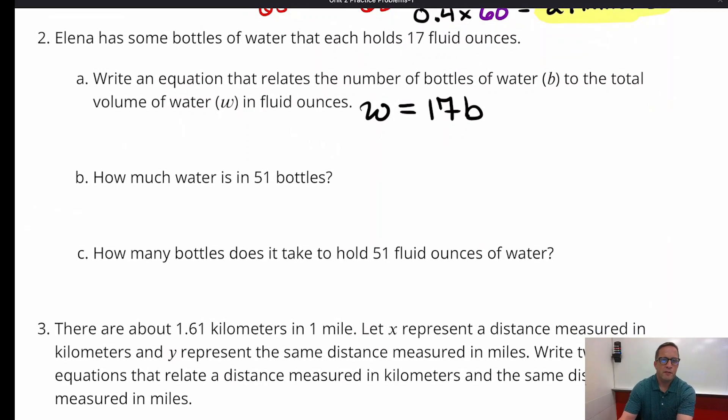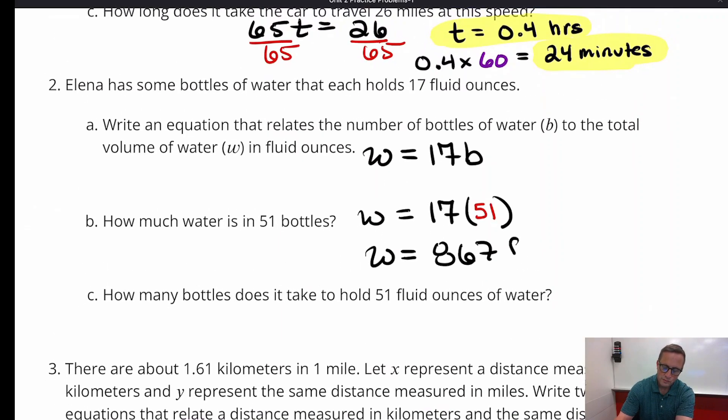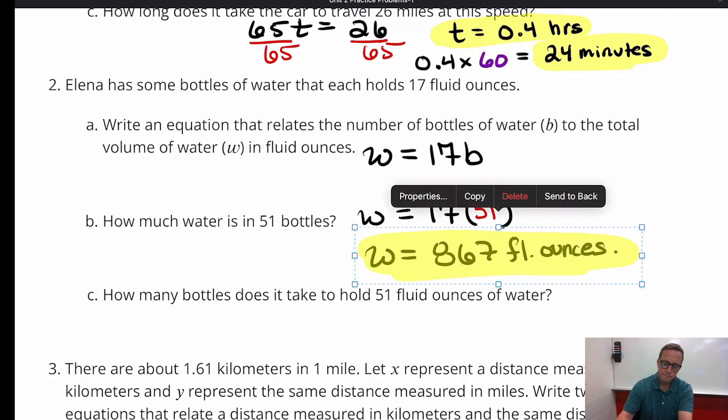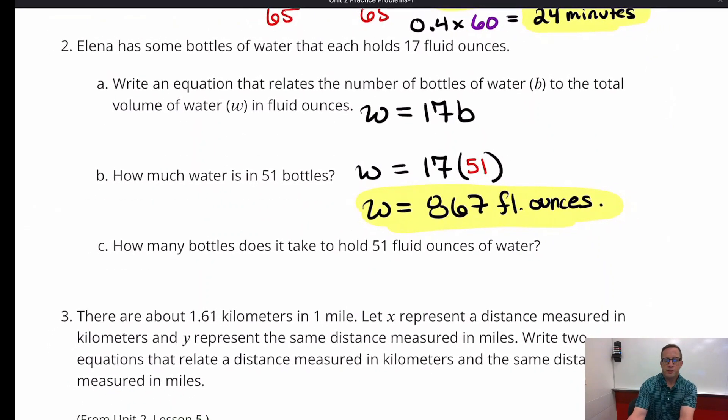So the volume of water is going to be equal to 17 times how many bottles there are. So that's going to be it. And then for B, we're just going to plug that in. So instead of writing 17 times B, we're going to do 17 times 51. So 17 times 51 is 867. So that's the volume of the water. 867 fluid ounces.